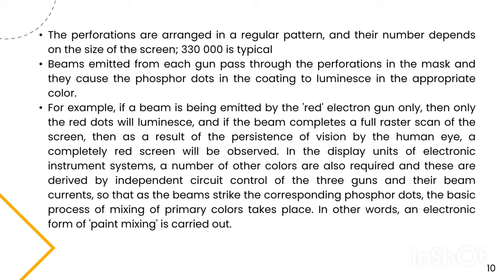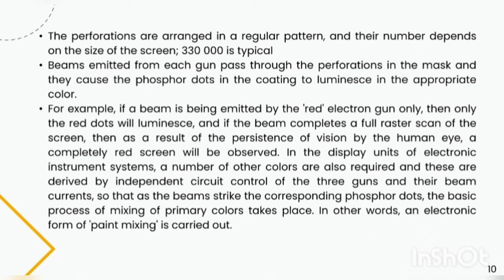Beams emitted from each gun pass through the perforations in the mask and cause the phosphor dots in the coating to luminesce in the appropriate color. For example, if a beam is emitted by the red electron gun only, then only the red dots will luminesce, and if the beam completes a full raster scan of the screen, then as a result of persistence of vision by the human eye, a completely red screen will be observed. In display units of electronic instrument systems, other colors are derived by independent circuit control of the three guns and their beam current, so that as the beam strikes the corresponding phosphor dots, the basic process of mixing primary colors takes place.